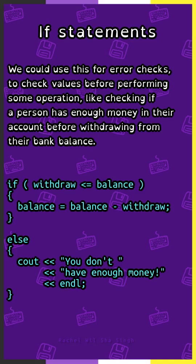For example: if withdraw is less than or equal to balance, then balance equals balance minus withdraw. Else, cout 'you don't have enough money.'